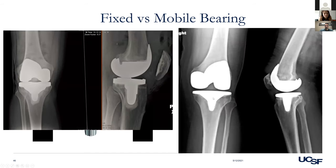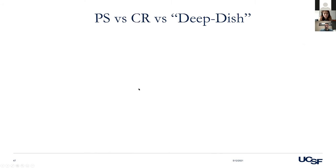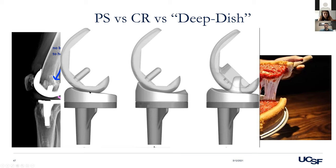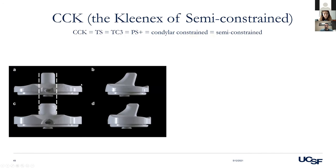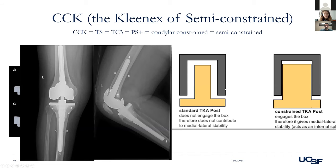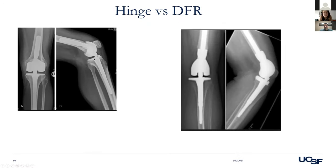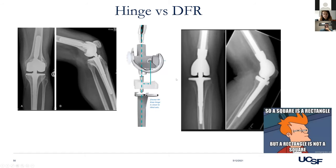PS versus CR: look for the box versus the pegs. A CR (cruciate-retaining) knee relies on the PCL — the poly is relatively flat. Deep dish has a large anterior lip that pushes the knee back during flexion. PS (posterior-stabilized) has a post-and-cam mechanism that pulls you back. CCK or semi-constrained knees have thicker central posts and often a reinforcement post. A hinge is actually mechanically linked with a rotating platform to offload stresses. A DFR replaces the condyles entirely.